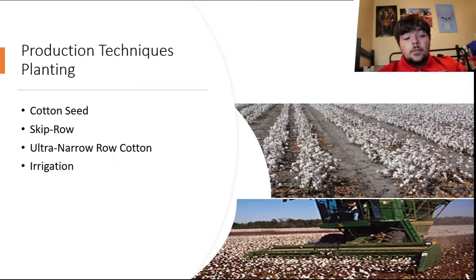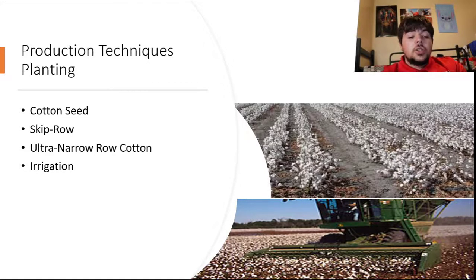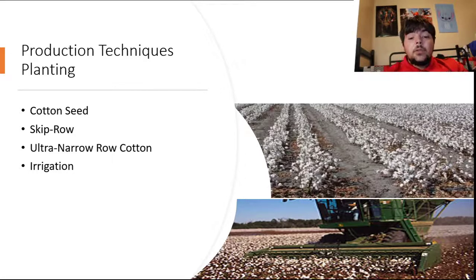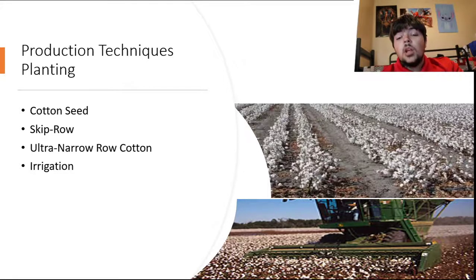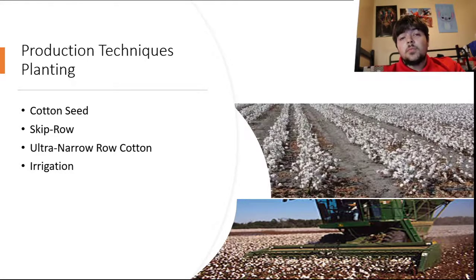There are two main production techniques for planting cotton. Skip row, the top picture, leaves every third row unplanted to allow for improved soil moisture in semi-arid regions. Ultra narrow row cotton, shown in the bottom picture, allows for more sunlight and better utilization of rainfall while also reducing time between planting and harvesting. The downside is that pest and early weed management is harder, and the producer has to use a cotton stripper for harvesting because there are no individual rows when it's all bunched together.